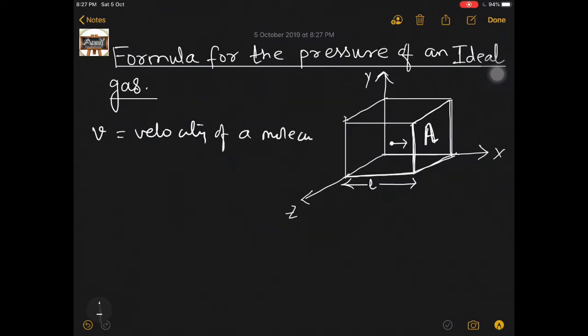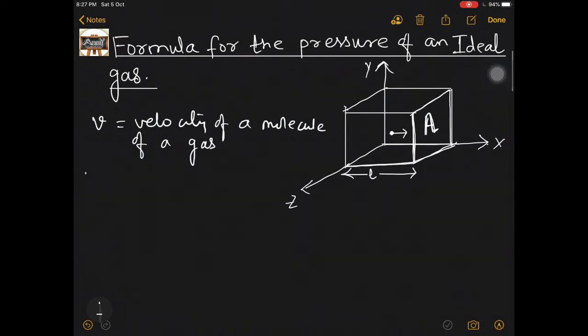V is the velocity of a molecule of a gas. Now, as you know, a gas is free to roam around in all three directions: x, y, as well as z. So let me say Vx, Vy, and Vz are the components of velocity along the three axes respectively.